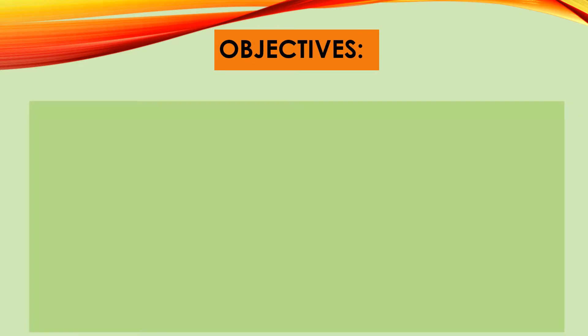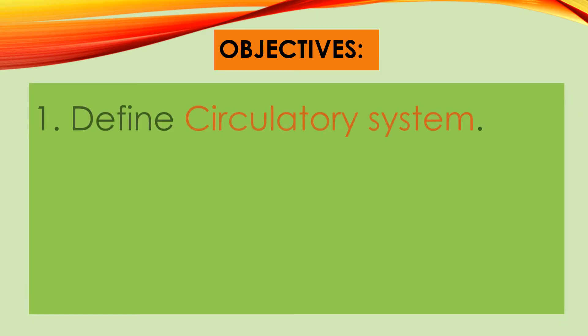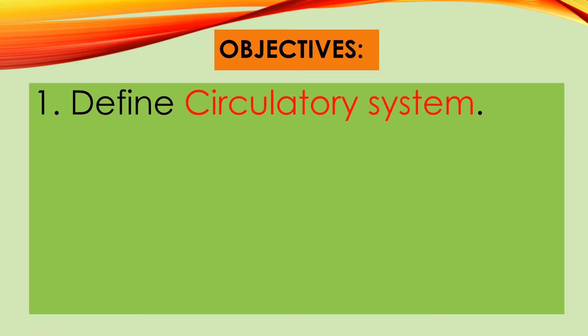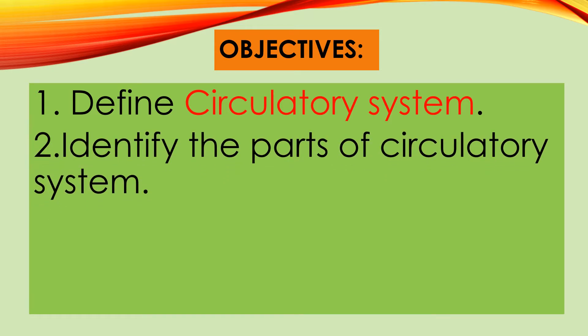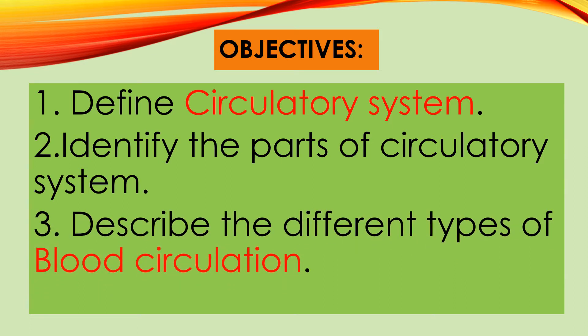Today, you should be able to: number one, define the circulatory system; number two, identify the parts of the circulatory system; and the last one, describe the different types of blood circulation.